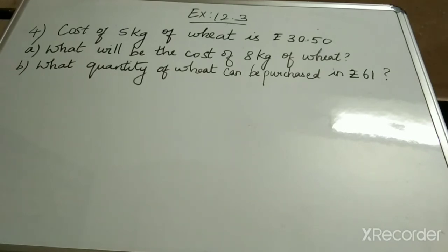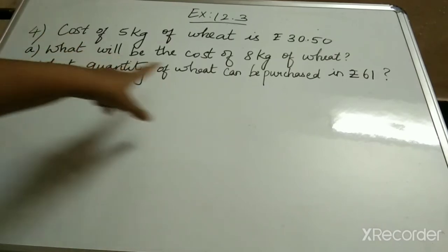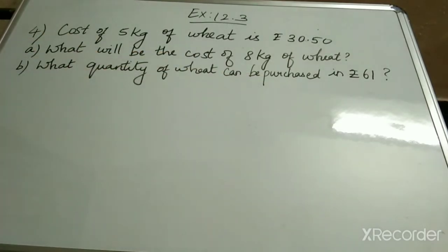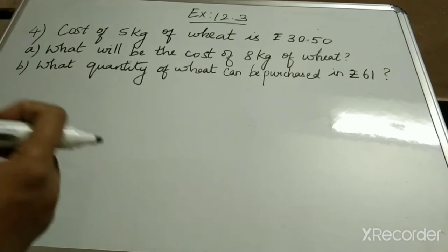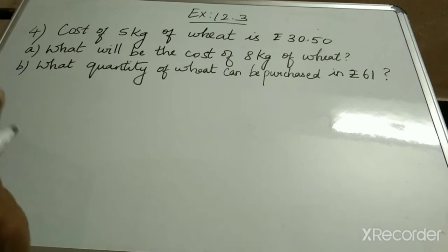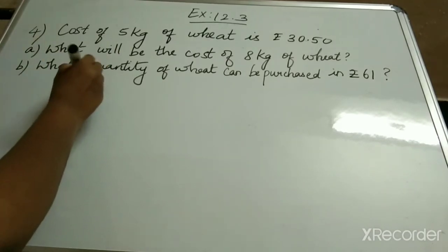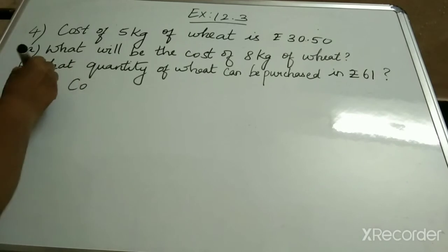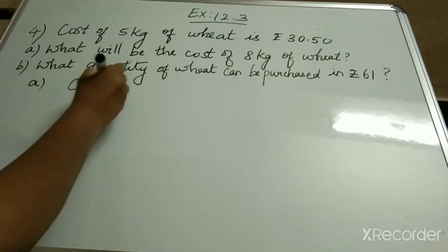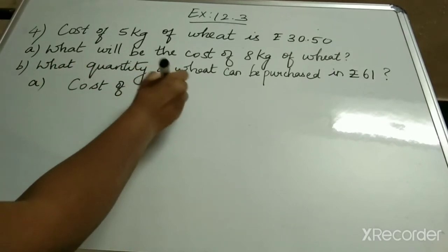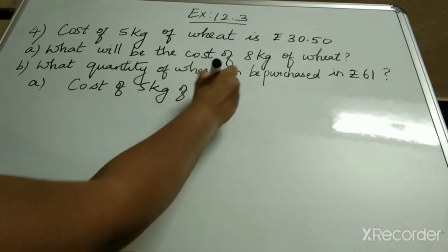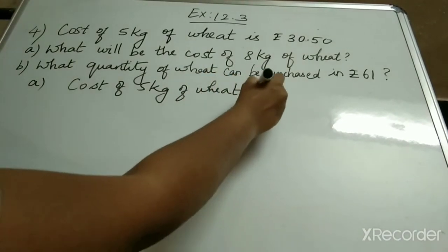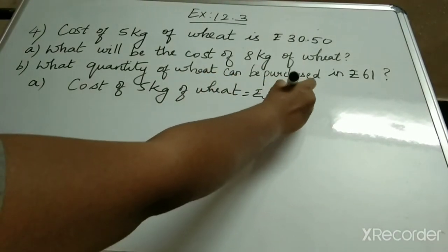In subdivision (a), what will be the cost of 8 kilograms of wheat? The cost of 5 kg is given. We will use the unitary method, so first we have to find the cost of 1 kg. Cost of 5 kg of wheat is equal to rupees 30.50.